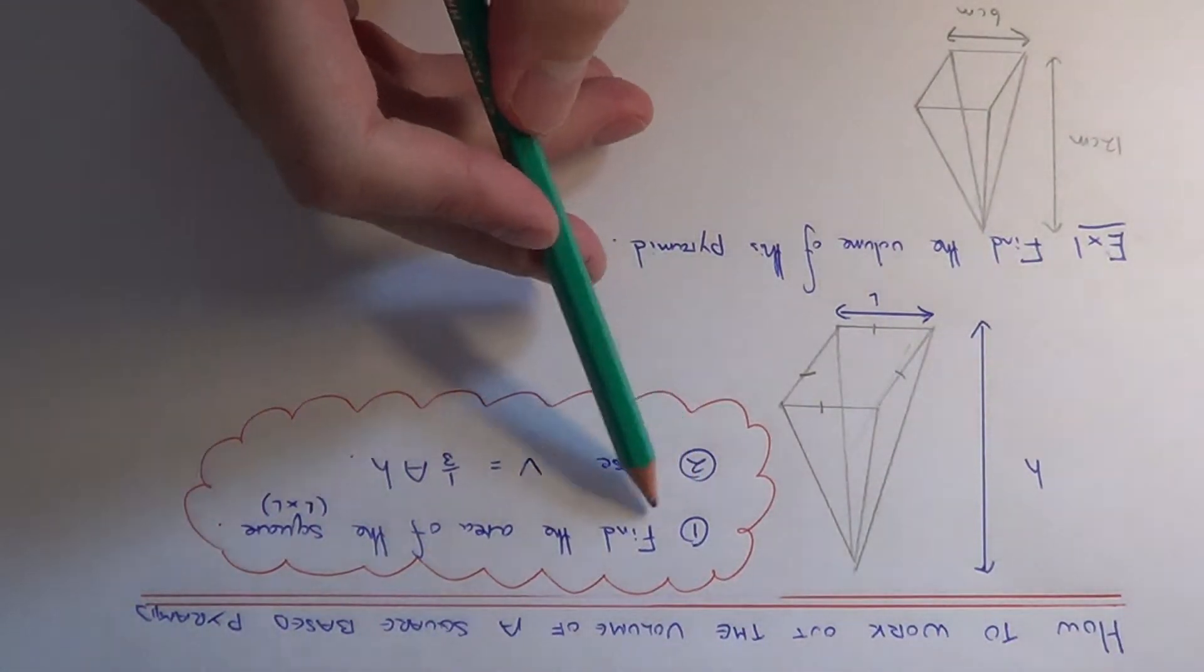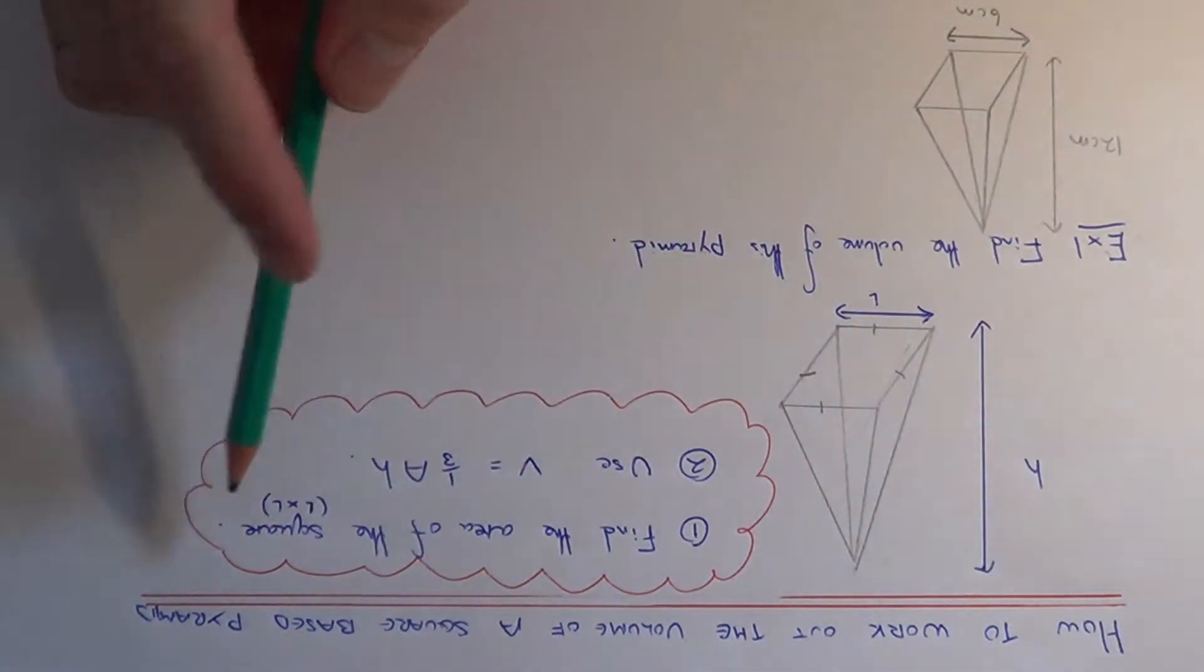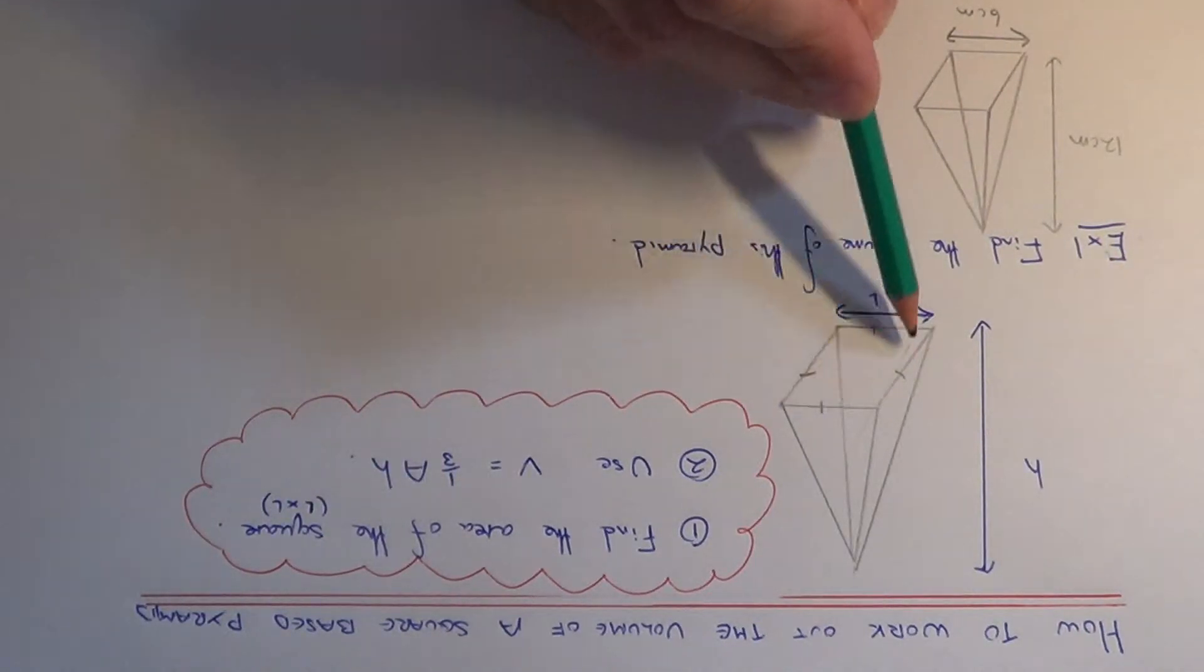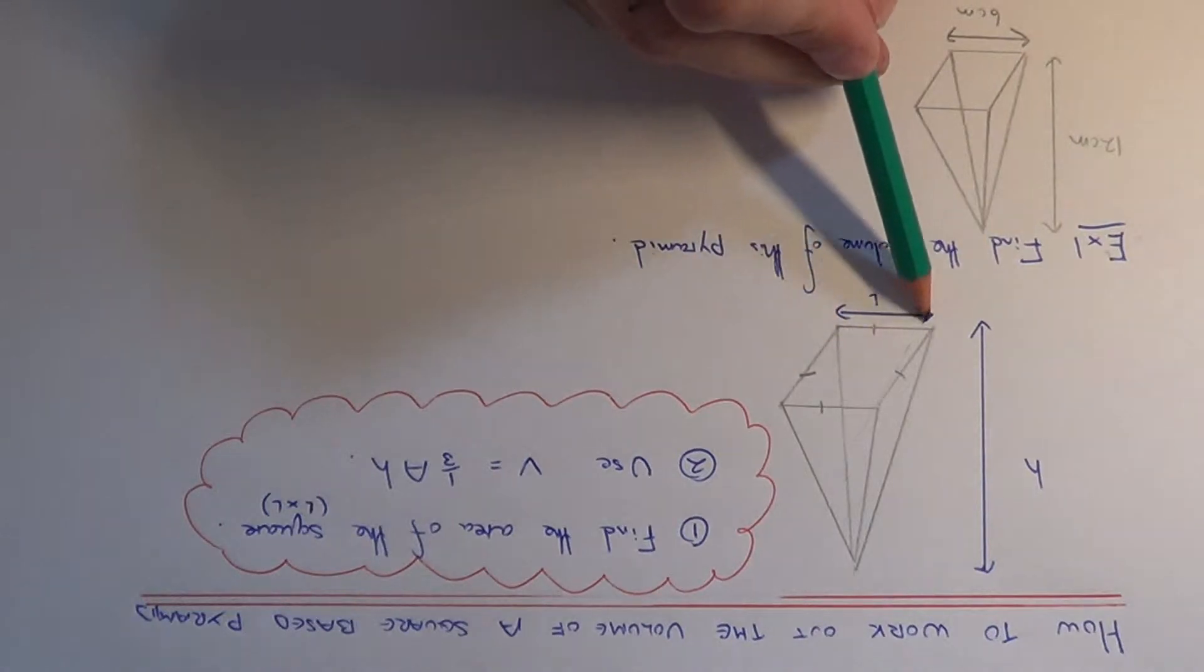The first thing you need to do is work out the area of the square face at the bottom of the pyramid. You do this by multiplying the two side lengths of the square together.